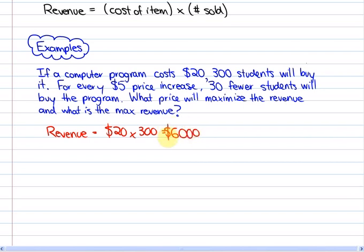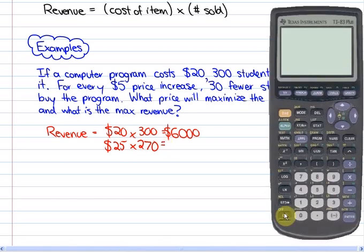If they increased it by $5, let's say to $25, 30 fewer students, which would be 270 students, would buy the program. And their revenue would be $6,750.